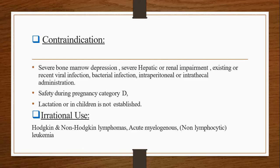Regarding contraindications, this drug is contraindicated in severe bone marrow depression, severe hepatic or renal impairment, existing or recent viral infection, acute or chronic bacterial infections, and intraperitoneal or intrathecal administration is also contraindicated. It is contraindicated in pregnancy — safety during pregnancy is category D — and safety during lactation or in children is also not established.